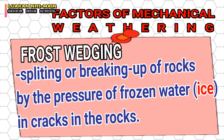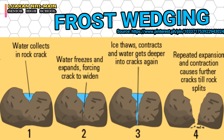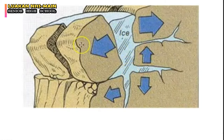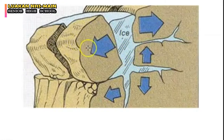The third factor is frost wedging — the splitting or breaking up of rocks by the pressure of frozen water in cracks within the rocks. Linking back to temperature: because of expansion and contraction, cracks can form in rocks. And because there are cracks, water can enter. When the outside temperature drops to freezing point, the liquid water can solidify and become ice, which can stretch the cracks wider and eventually break the rock apart.